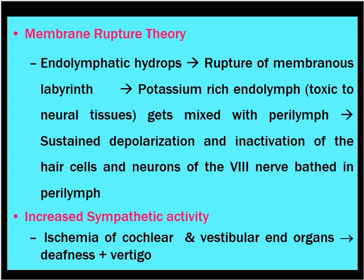That leads to acute symptoms — vertigo — and patients may also experience tinnitus and decreased hearing. Increased sympathetic activity leads to ischemia of the cochlea and vestibular organs, causing deafness and vertigo. The attacks are intermittent, but as the disease progresses, patients will have increasing amounts of hearing loss and vertigo.